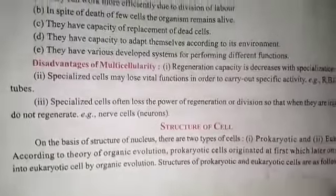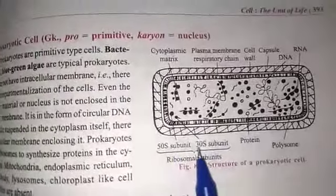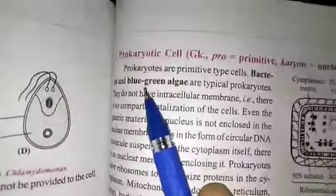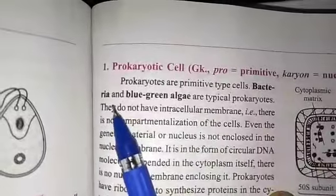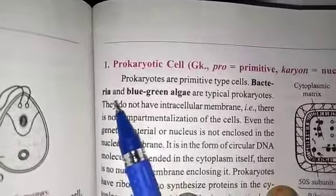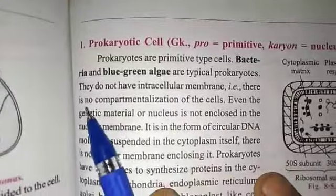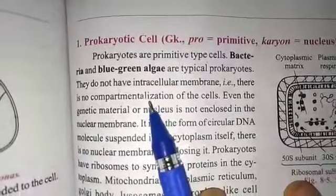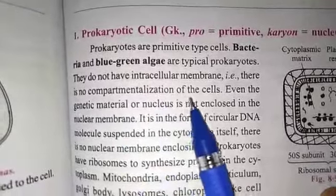Prokaryotic cells are a primitive type of cell, such as bacteria and blue-green algae. They are typical prokaryotes. They do not have intracellular membranes — that is, there is no cytocompartmentalization of the cell.